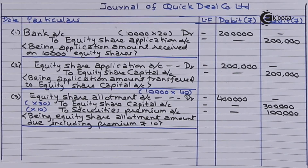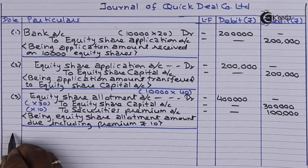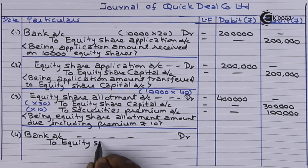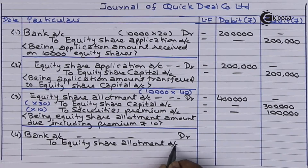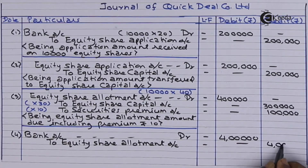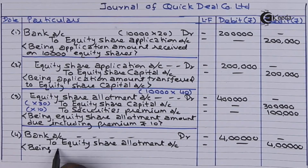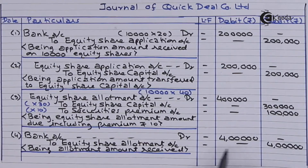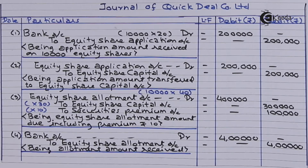All shareholders have paid this amount. So the next entry is for receiving the allotment amount. Bank account debit rupees 4 lakhs, to equity share allotment account rupees 4 lakhs. This is the entry for receiving the allotment amount. With this we have completed the application and allotment stages.